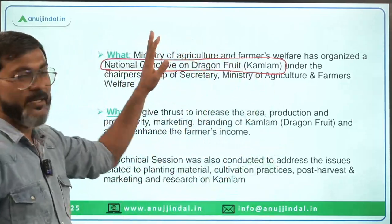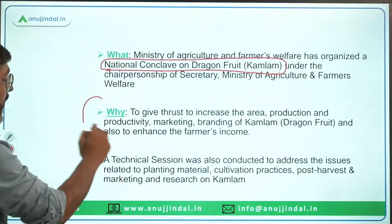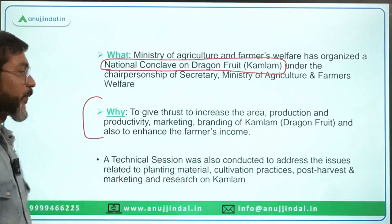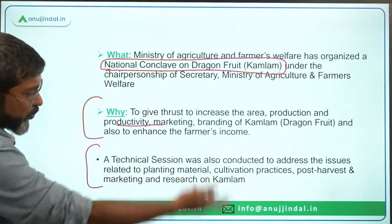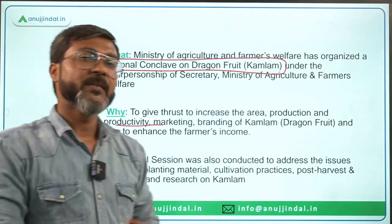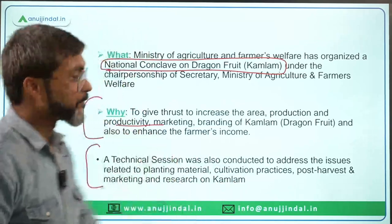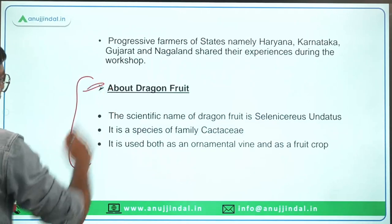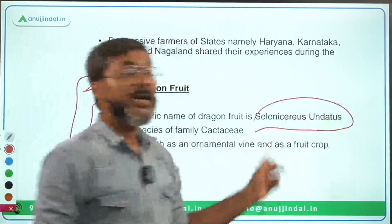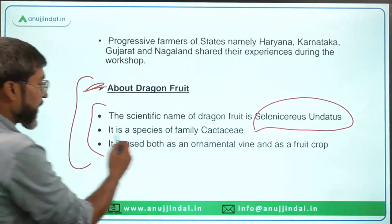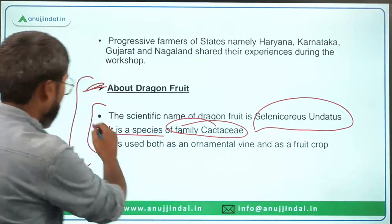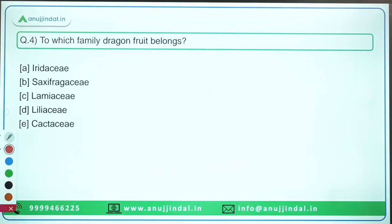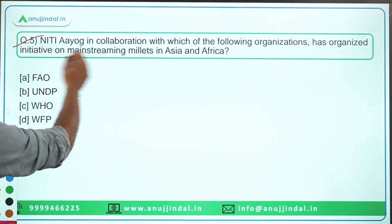This conclave was organized by the Ministry of Agriculture and Farmers Welfare to boost the area, production, productivity, marketing, and branding of dragon fruit in the country. A technical session was also conducted to address production-related issues. Dragon fruit's scientific name is Selenicereus undatus. It is a species of the family Cactaceae and is used as an ornamental vine and as a fruit crop. The correct answer is option E — Cactaceae.